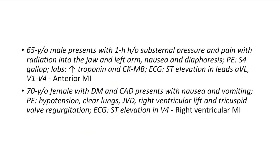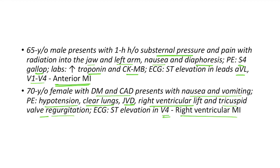Clinical case 1: A 65-year-old male presents with 1-hour history of substernal pressure and pain with radiation to jaw and left arm, nausea and diaphoresis. Physical examination reveals S4 gallop. Lab investigations show elevated troponin and CKMB. ECG shows ST elevation in leads aVL, V1-V4 — a classic case of anterior myocardial infarction. Clinical case 2: A 70-year-old female with DM and CAD presents with nausea and vomiting. Physical examination shows hypotension, clear lungs, jugular venous distension, right ventricular lift and tricuspid valve regurgitation. ECG shows ST elevation in lead V4R — a classic case of right ventricular myocardial infarction.